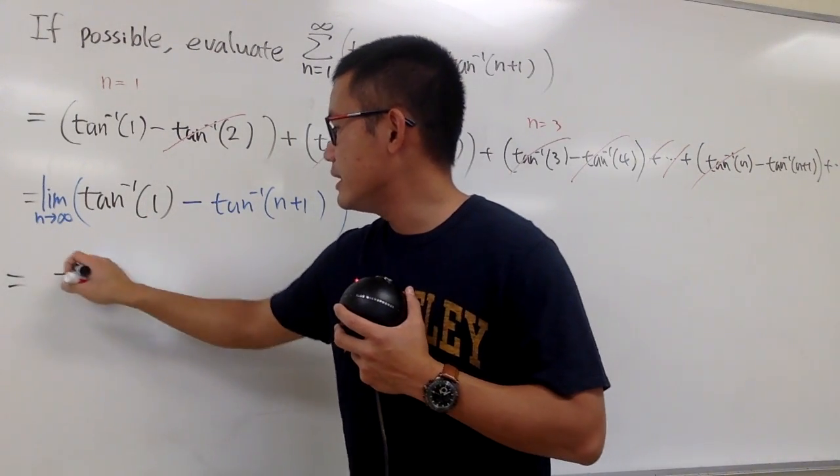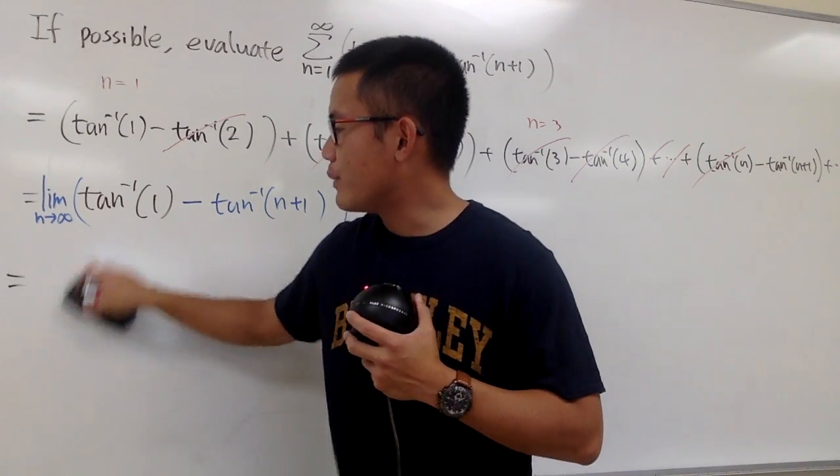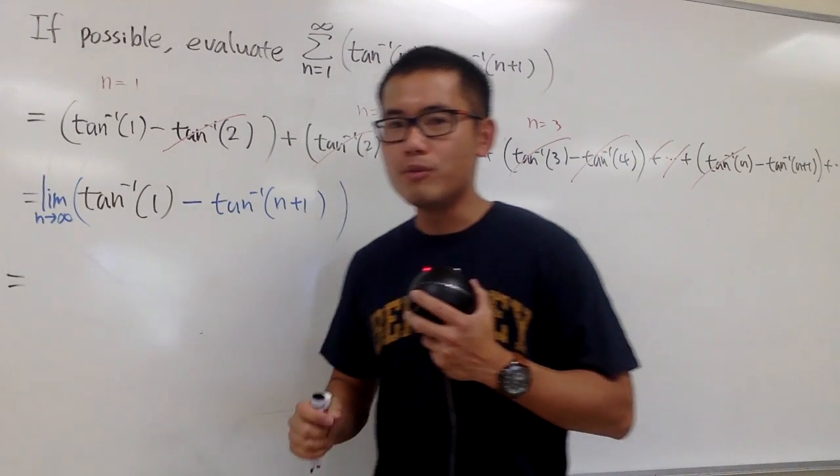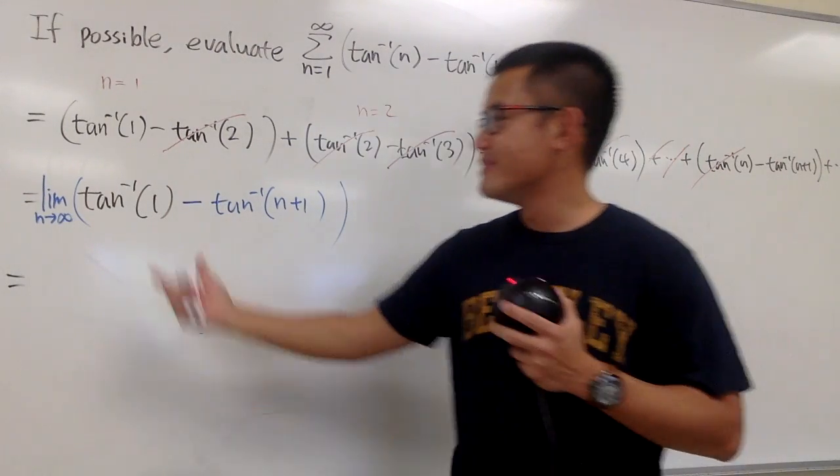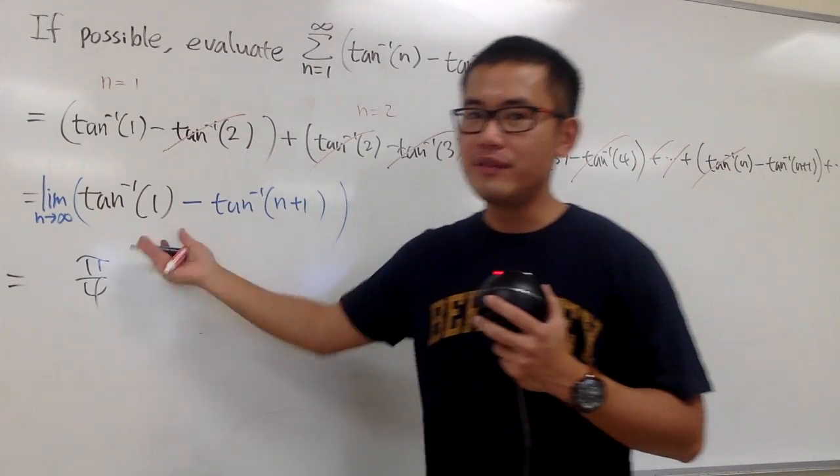Okay, so the first one is just inverse tangent of 1, and we know that we can calculate this. You have to ask yourself, tangent of what angle will give you 1. This is just pi over 4, because tangent of pi over 4 gives you 1.